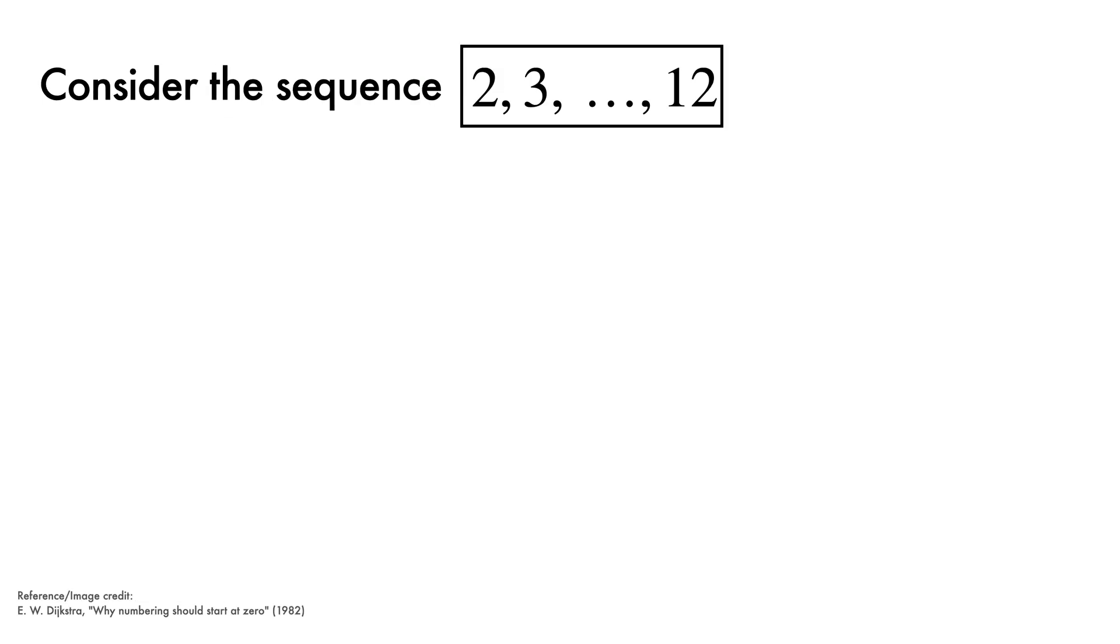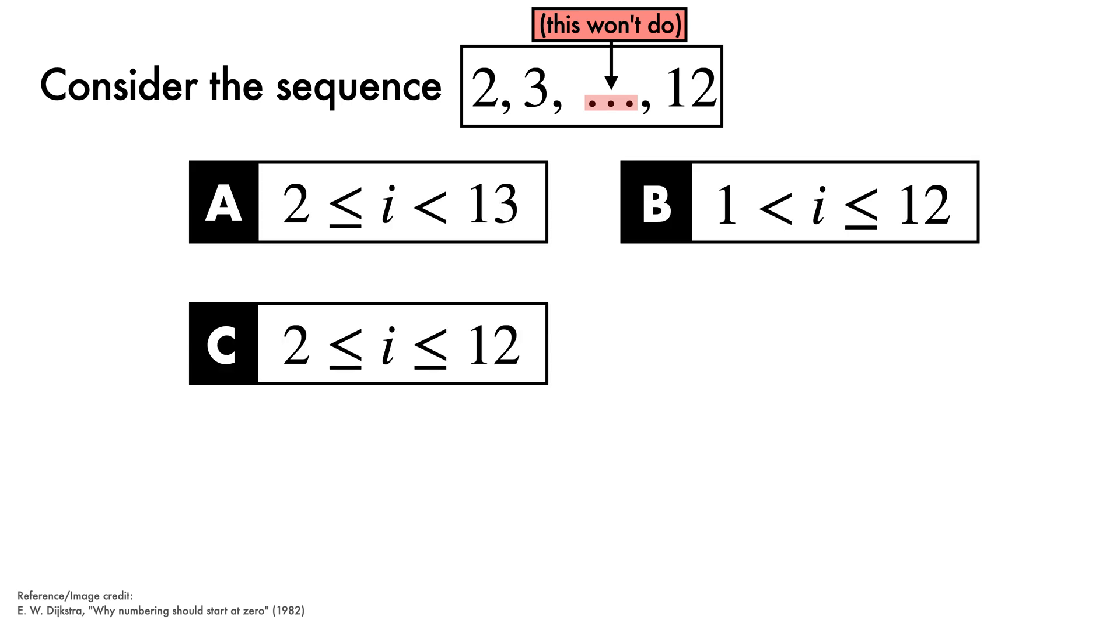Consider, says Dijkstra, the following sequence. How are we to write this without the presence of these three pernicious dots loitering in the middle, which clearly won't do? We have, he observes, four viable options. Let's call them A, B, C, and D.